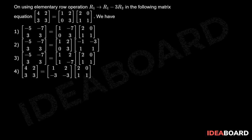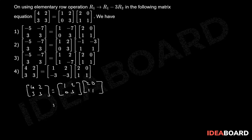The given matrix equation is [4, 2, 3, 3] equals [1, 2, 0, 3] into [2, 0, 1, 1]. By applying the row operation R1 implies R1 minus 3R2,